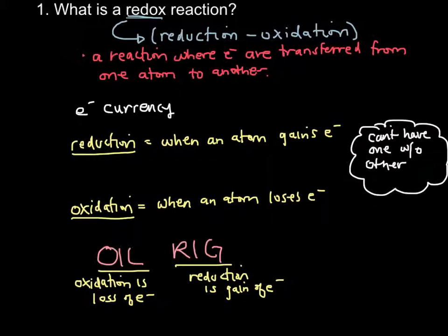Some examples of redox reactions where electrons are transferred include combustion reactions, which are always redox reactions. That transfer of electrons involves a lot of energy output — fire, of course. Cellular respiration, photosynthesis, and the reactions that take place in a battery that you use to power your cell phones or iPods — those reactions are all redox reactions.